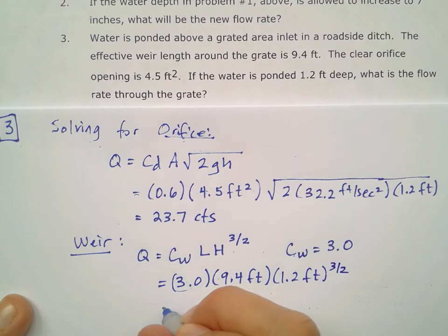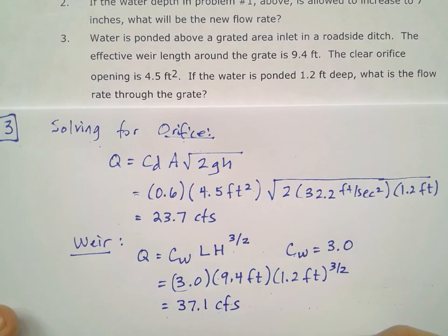And so that does give me a flow rate of 37.1 cubic feet per second for that inlet behaving as a weir.